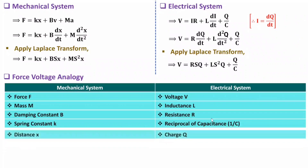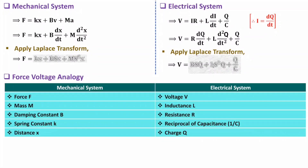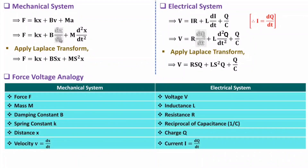Comparing displacement x with the electrical equation, displacement x is equivalent to charge q. One more parameter to compare: dx/dt in the mechanical system is velocity, and dq/dt in the electrical system is current. So in force voltage analogy, velocity is equivalent to current i. That is how one can establish the force voltage analogy by comparing these two equations.